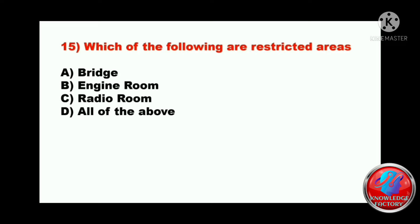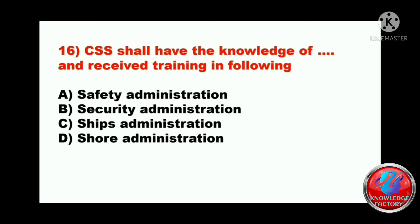Question fifteen: which of the following are restricted areas? A) bridge, B) engine room, C) radio room, or D) all of the above. The answer is D - all of the above. Question sixteen: the SSO shall have knowledge of and receive training in A) safety and administration, B) security administration, C) ship's administration, or D) shore administration. The answer will be B - security administration.